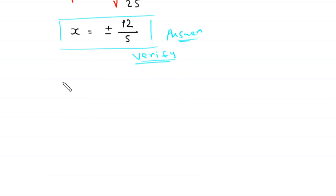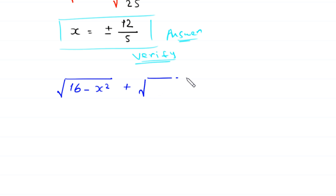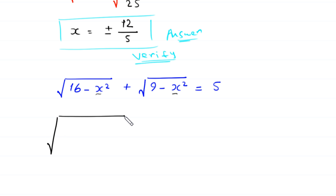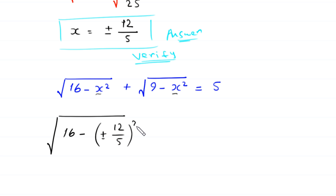The original equation is: square root of (16 minus x squared) plus square root of (9 minus x squared) equals 5. We replace every x with plus or minus 12 over 5, so this becomes square root of 16 minus (±12/5) squared.